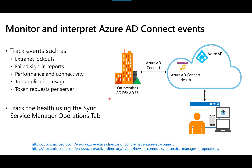It's important to track the health of your Azure AD Connect environment. You're likely to be tested on your understanding of what types of events are significant and how to resolve related issues — for example, identifying and resolving extranet lockouts with ADFS or failed sign-ins. Closely related is knowing where to find alerts: you'd look in the Sync Service Manager Operations tab. A link at the bottom provides additional information on identifying login issues through Azure AD Connect.